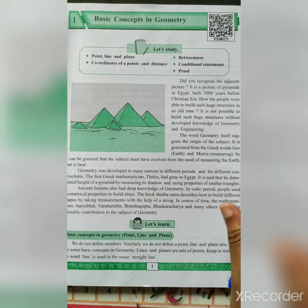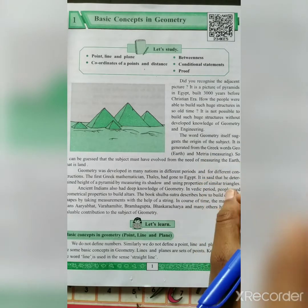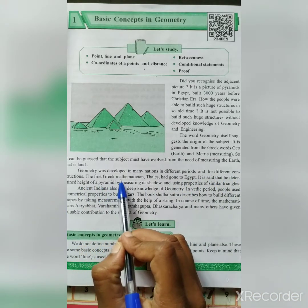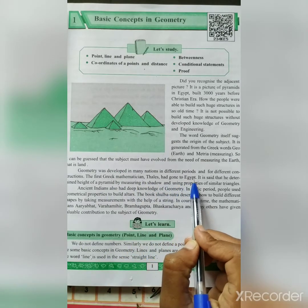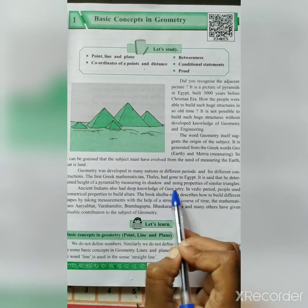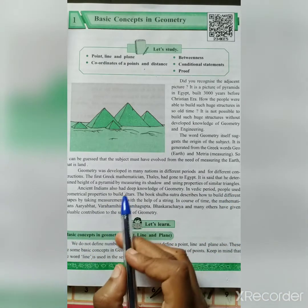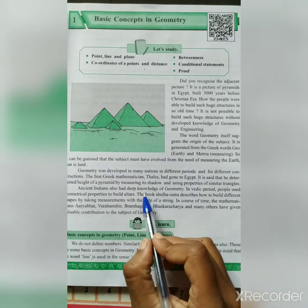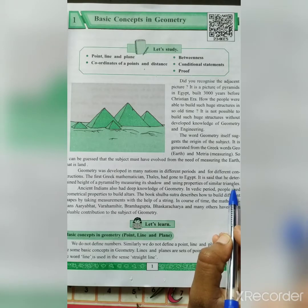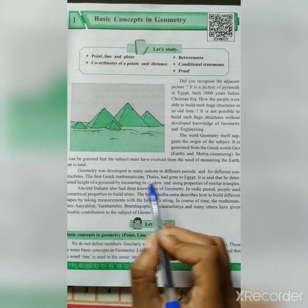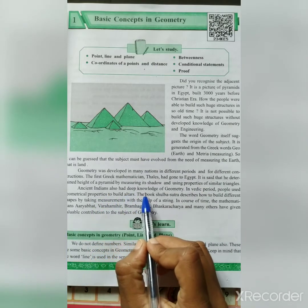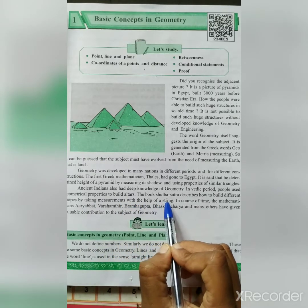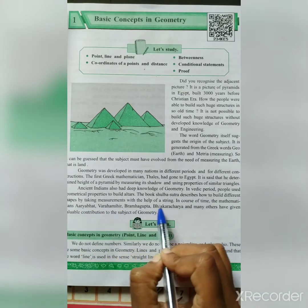Geometry was developed in many nations in different periods and for different constructions. The first Greek mathematician, Thales, had gone to Egypt. It is said that he determined height of the pyramid by measuring its shadow and using properties of similar triangles. Ancient Indians also had deep knowledge of geometry. In Vedic period, people used geometrical properties to build altars.